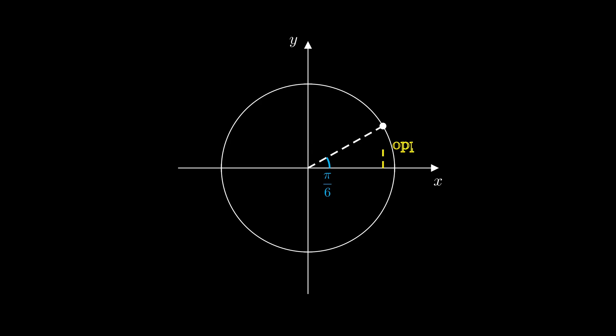The sine function can be defined as the opposite divided by the hypotenuse in this right-angled triangle, or if we're in the unit circle which has radius 1, it's just the length of the opposite side, which is the y value of this point on the unit circle.